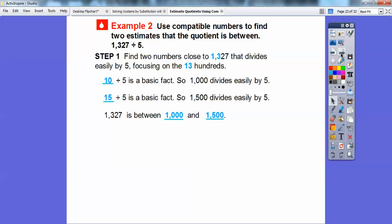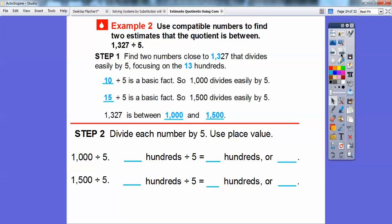Step two, let's divide each of those numbers by 5. We're going to divide 1,000 divided by 5, and we're going to divide 1,500 divided by 5. 1,000 is how many hundreds right there? Well, here's the hundreds right there. So it's going to be 10 hundreds. 1,500 is 15 hundreds because 5 is in the 100s spot. So I get 10 hundreds divided by 5 and 15 hundreds divided by 5.